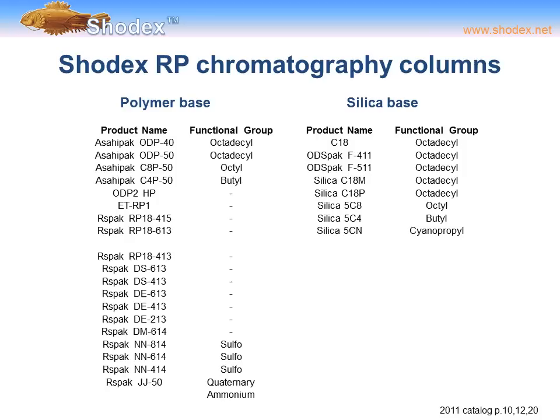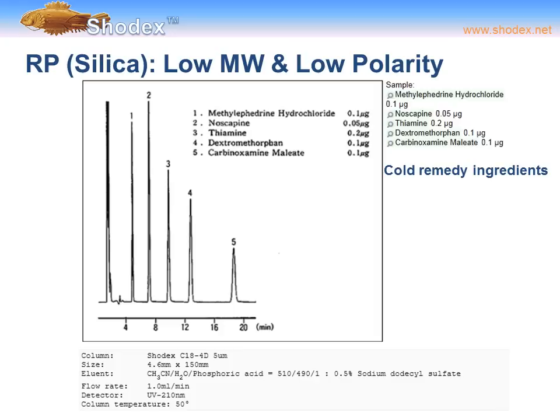Traditionally, silica base was modified with an octadecyl C18 functional group. However, with a polymer base, other functional groups can be used to modify the surface, such as sulfate groups or quaternary ammonium. Reverse phase chromatography works well with low molecular weight nonpolar compounds such as small molecule drugs.